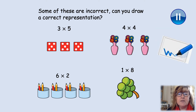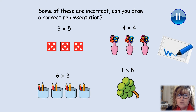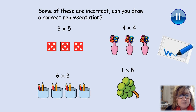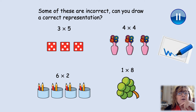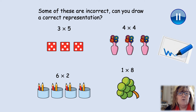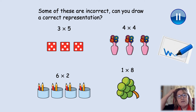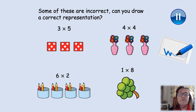How did you get on? So we said some of these are incorrect and you've got to draw the correct ones. The equations are correct, so you've got to do the correct drawings. The first one we've got three dice all with the number five on. Is that correct? That is correct, isn't it? We've got three lots of five. Well done.